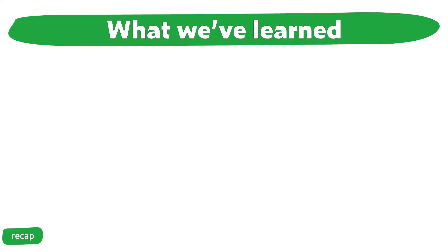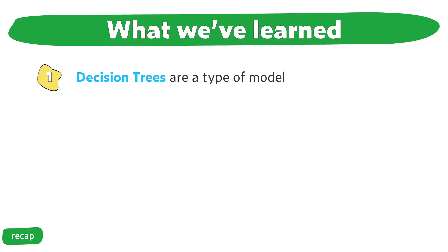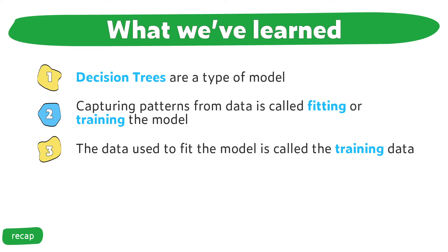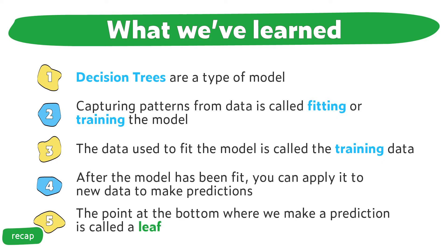Between everything we've covered in this video along with what you've read on the Kaggle Intro to Machine Learning course — How Models Work — here's a summary of the major points. One: decision trees are a type of model. Two: capturing patterns from data is called fitting or training the model. Three: the data used to fit the model is called the training data. Four: after the model has been fit, you can apply it to new data to make predictions. And five: the point at the bottom of a tree where we make a prediction is called a leaf.